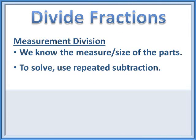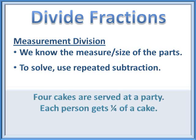The problem we just looked at was one where we knew the measure or the size of the parts being taken away — we just didn't know how many times we could take that away from the whole. That's called measurement division. Measurement division is when you know the size of the part; you just don't know how many times you can take the part away. This type of problem can be solved using repeated subtraction.